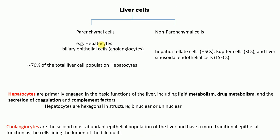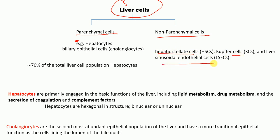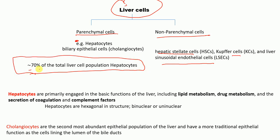Liver cells can be divided into two categories: parenchymal cells and non-parenchymal cells. Parenchymal cells are mainly hepatocytes, or biliary epithelial cells, also called cholangiocytes. Non-parenchymal cells are hepatic stellate cells, Kupffer cells, and liver sinusoidal endothelial cells. Importantly, 70 percent of the total liver cell population is hepatocytes.